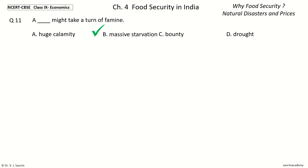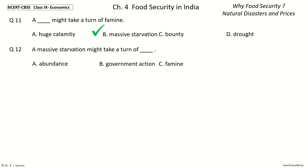Last question, Question 12: A massive starvation might take a turn of dash. The options are: abundance, government action, famine, foreign invasion. And the answer is famine. So, a massive starvation might take a turn of famine.